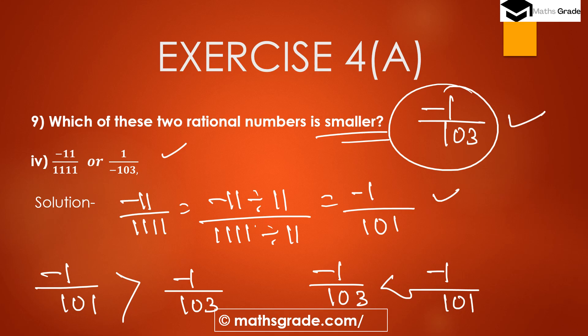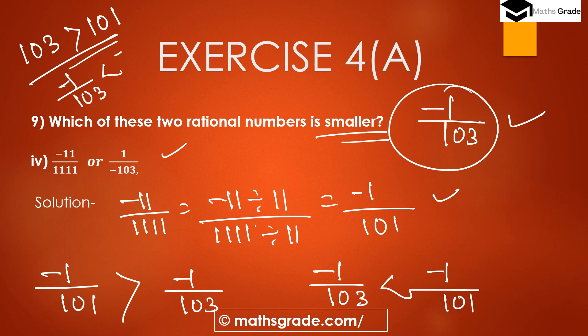So minus 1 divided by 103 is the smaller rational number because 103 is greater than 101. To summarize the rule: for rational numbers having equal numerators, the bigger denominator is the smaller rational number and the smaller denominator is the bigger rational number. Therefore, minus 1 divided by 103 is less than minus 1 divided by 101.